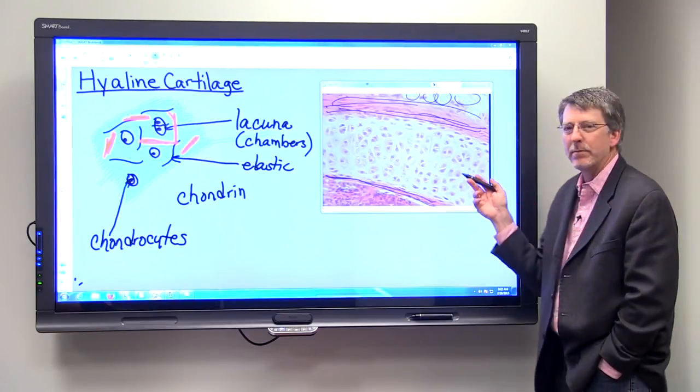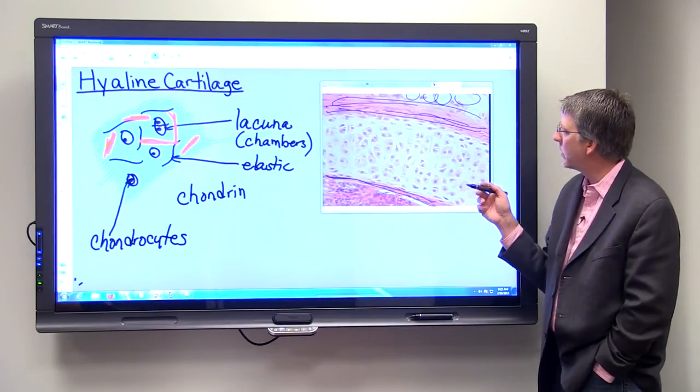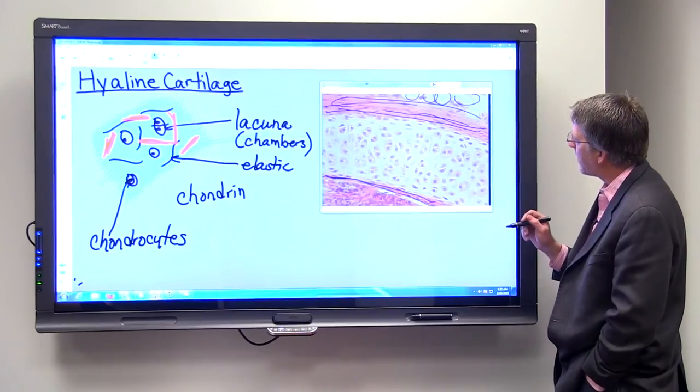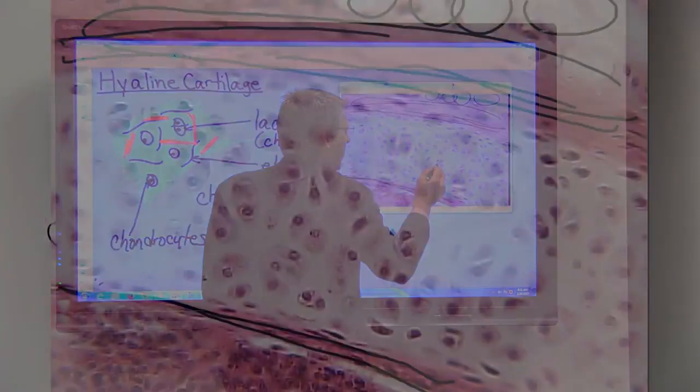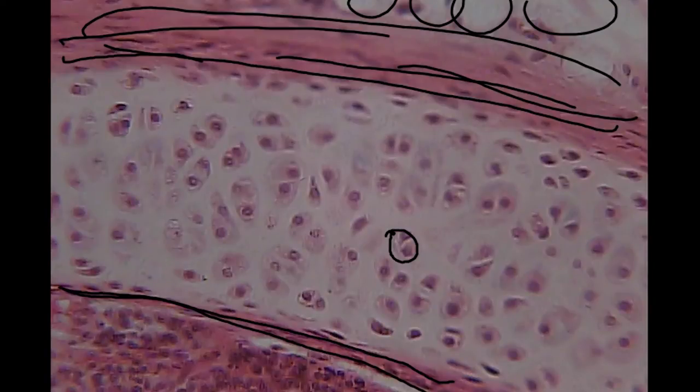Some people say it has the color of milk glass, if you know what milk glass is. And I just want to point out the lacuna. So there's a chamber called a lacuna, and you can see there are two chondrocytes found within that particular chamber. Here's another one. Everywhere you see these cells, there are lacuna that the cells are found in.